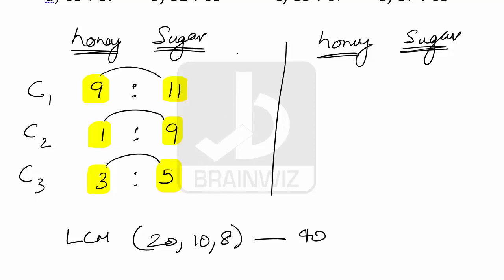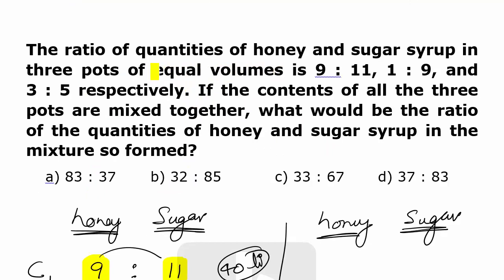So let's try to assume that the first container has 40 liters, the second container has 40 liters, and the third container has 40 liters. Why do we have to take 40 in all three? Because he has said equal volumes in all the three containers.